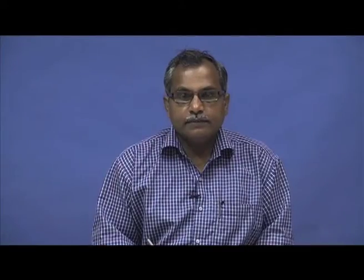Once c_mn is obtained, similarly the other sub-problems which have zero initial conditions and non-zero boundary conditions can be divided into a steady state part and a transient part, and we will be able to solve them. That completes the problem we were dealing with. Now let us go to the next problem.